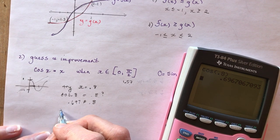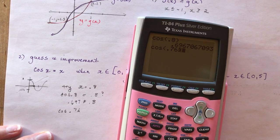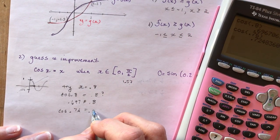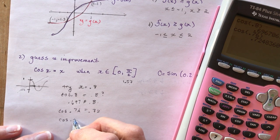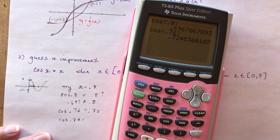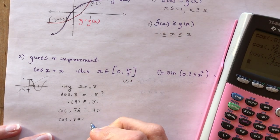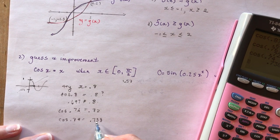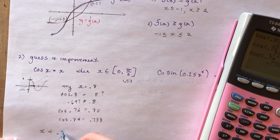Let's try cos(0.76) — I get about 0.72, so I'm going in the right direction. Now let's try cos(0.74) and I get 0.738. That's pretty close. They wanted one decimal place, so x is approximately equal to 0.7.